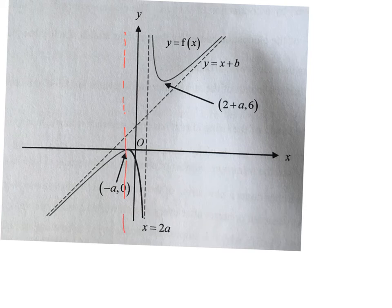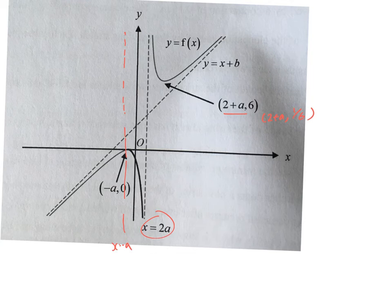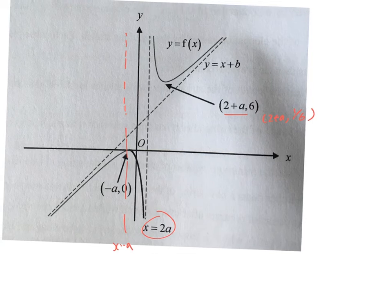You recognize that the asymptotes and intercepts of f(x) will give you the asymptotes of 1 over f(x). You drew the asymptotes correctly. A lot of you labeled x equals negative a. Some of you know that the maximum point will give you a minimum point, so you have (2 plus a, 1 over 6). An asymptote of f(x) gives you an intercept — some of you circled it because you weren't sure if it was in the domain, but you still get the mark.